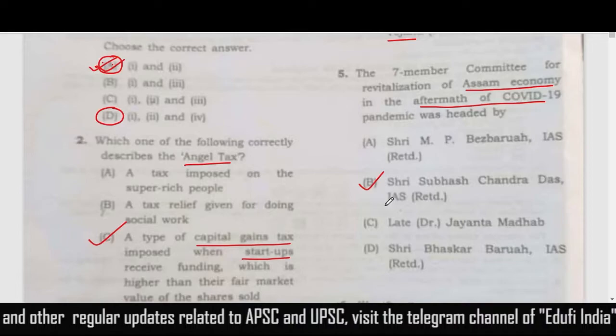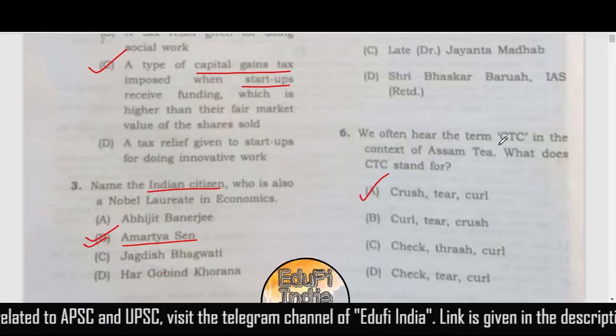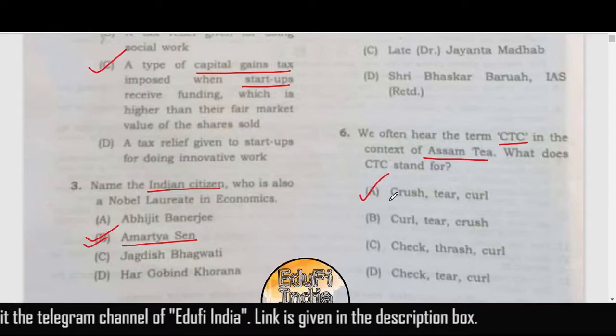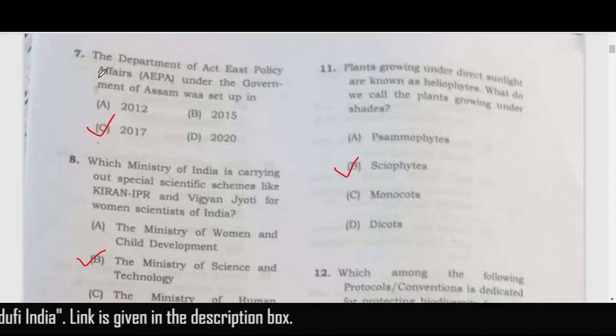The fifth question: the seven-member committee for revitalization of Assam's economy in the aftermath of COVID-19 was headed by Sri Subhas Chandra Das, who is retired — correct answer is B. The sixth question is about the term CTC with respect to Assam tea. The correct option is 'Crush, Tear and Curl' — option A.